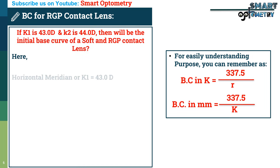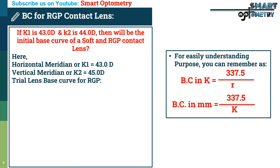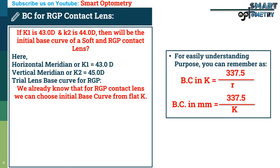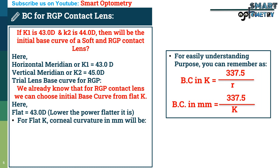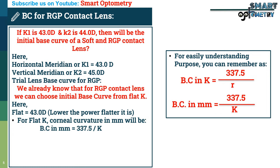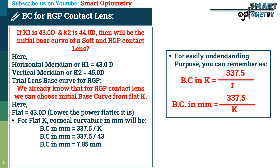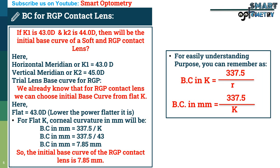Now, for the same example, let's see how to identify the initial base curve of an RGP trial contact lens. We already know that for RGP contact lens, we can choose the initial base curve from flat K. Here, flat K is 43 diopters. So for flat K, corneal curvature in mm will be: base curve in mm equals 337.5 divided by 43, equals 7.85 mm. So the initial base curve of the RGP contact lens is 7.85 mm.